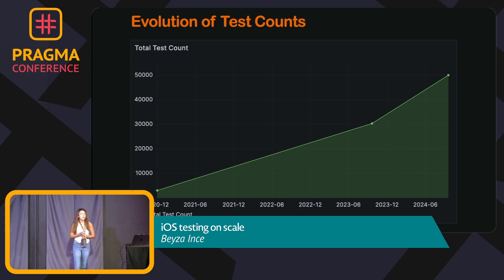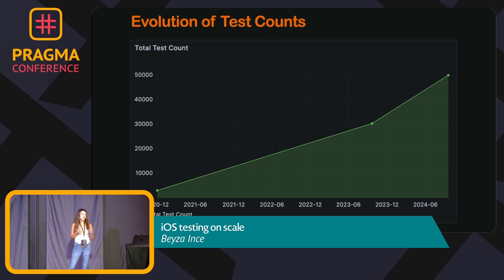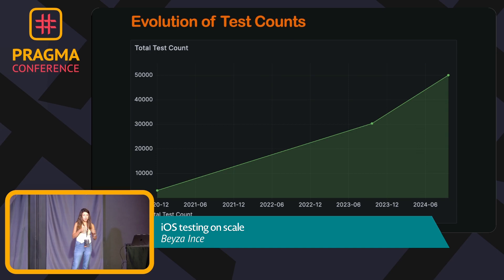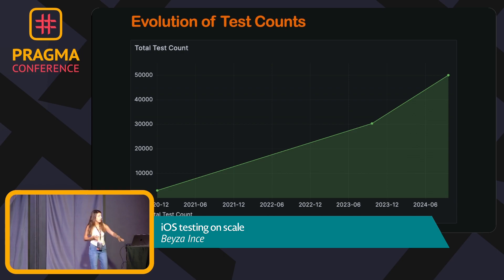That's why we started to add different test approaches to our project. We now have almost 30,000 tests and our goal for next year is to increase that number to 50,000. I tried to illustrate how we repeatedly increased this number since 2020. These numbers include both UI and unit test total counts in our environment.